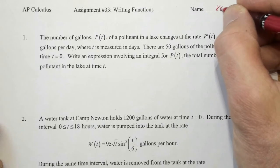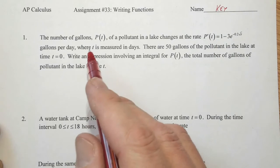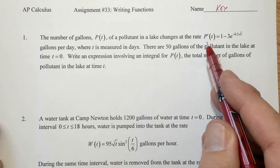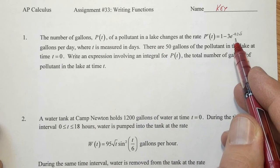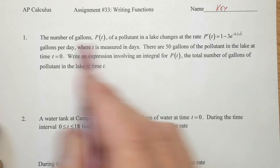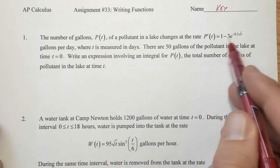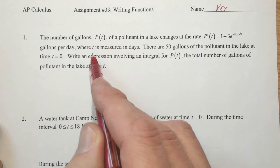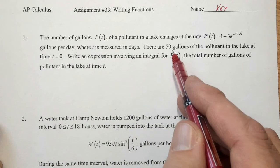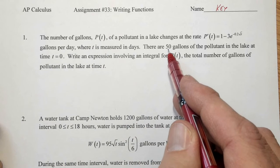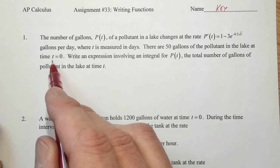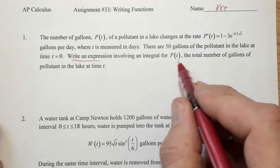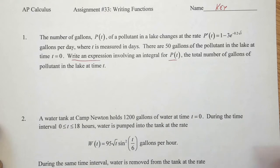Here's your key for assignment number 33. Our first problem, we see the number of gallons P(t) of a pollutant in a lake is changing at this rate: 1 minus 3 times e to the negative 2 tenths square root of T, gallons per day. So we see our rate, our derivative, is in terms of gallons per day, our pollutant is in terms of gallons, T is in terms of days. At the start of the leak, when T is 0, we see there are 50 gallons of pollutant in the lake. We want to write an expression for P(t).